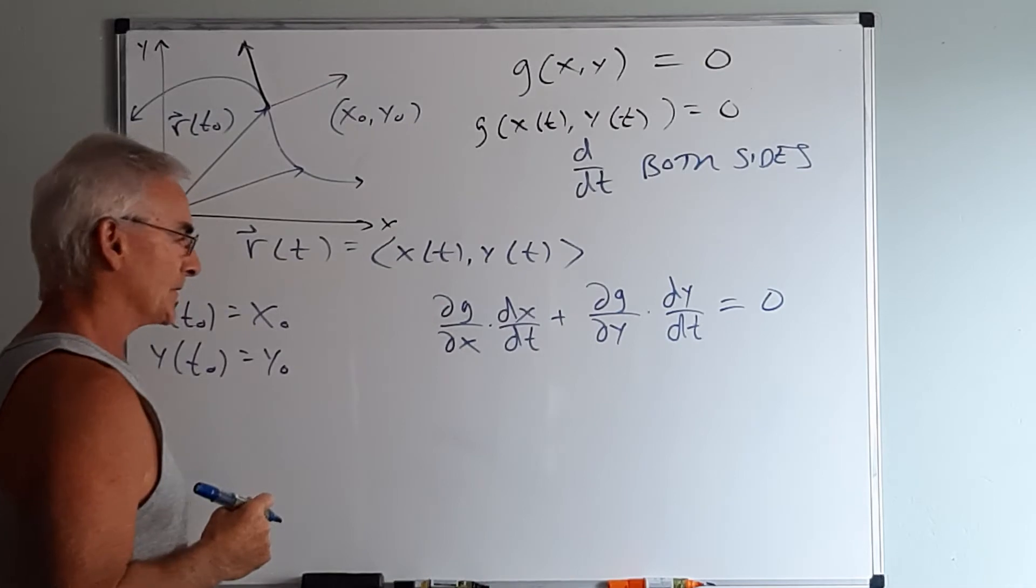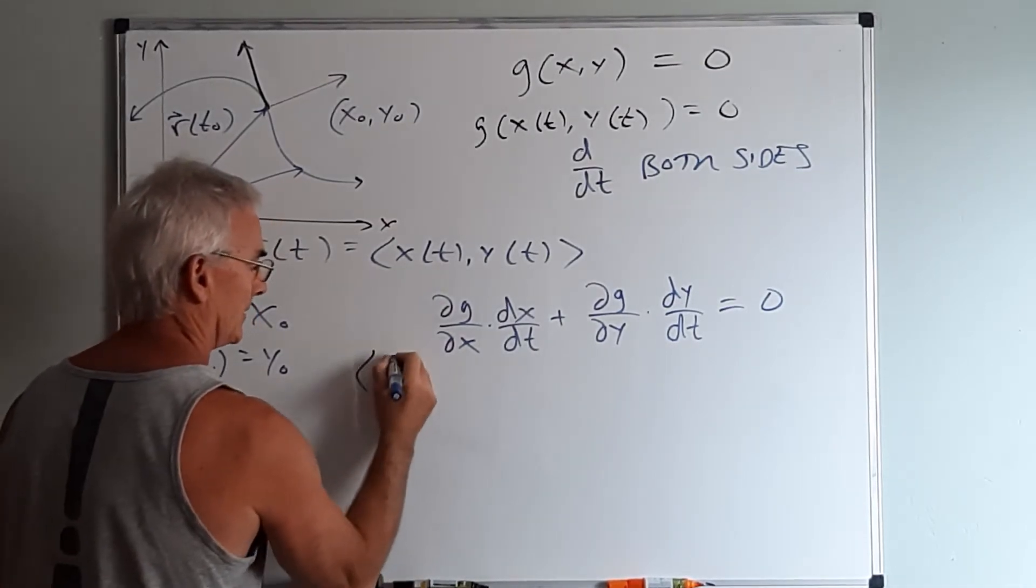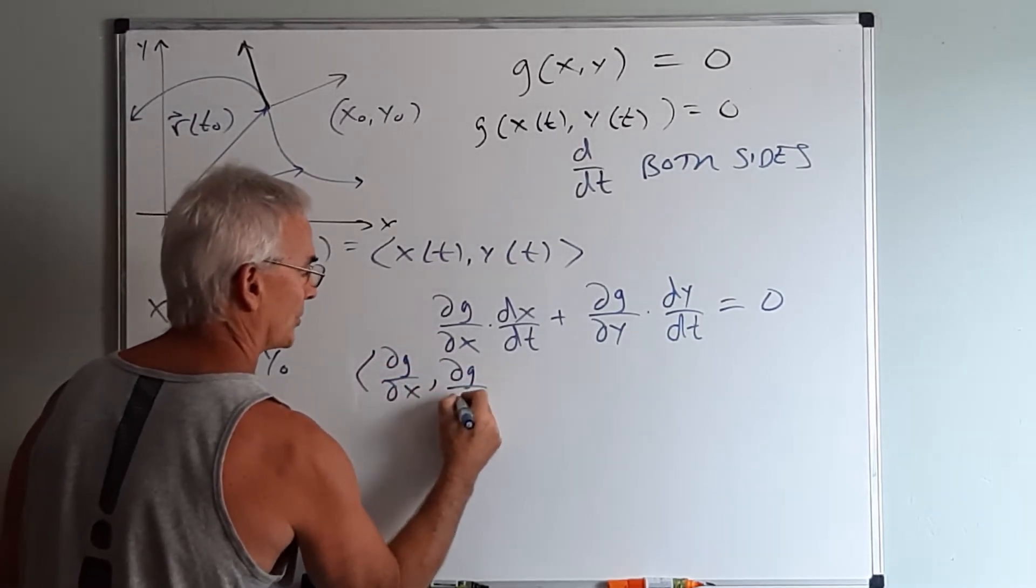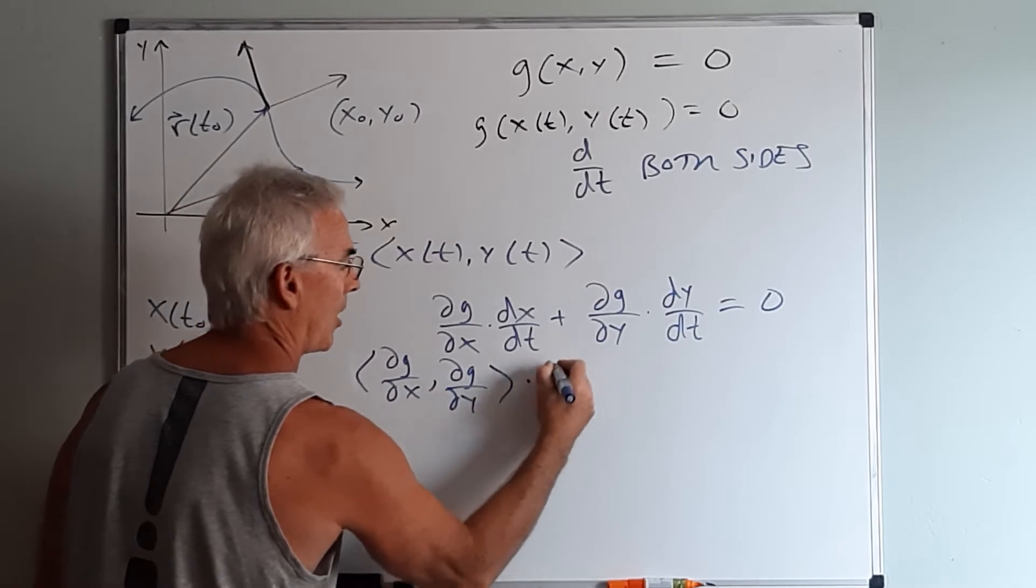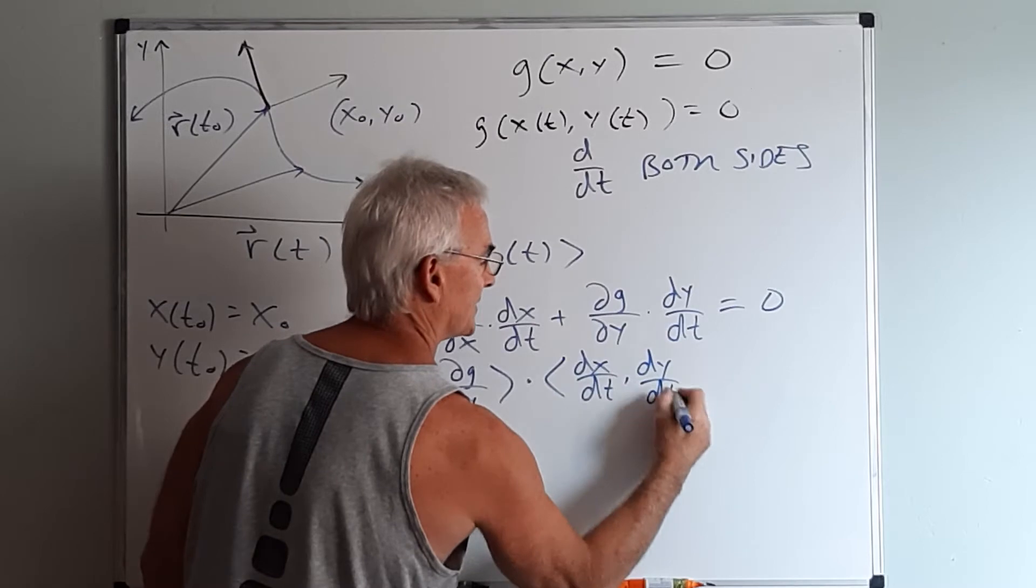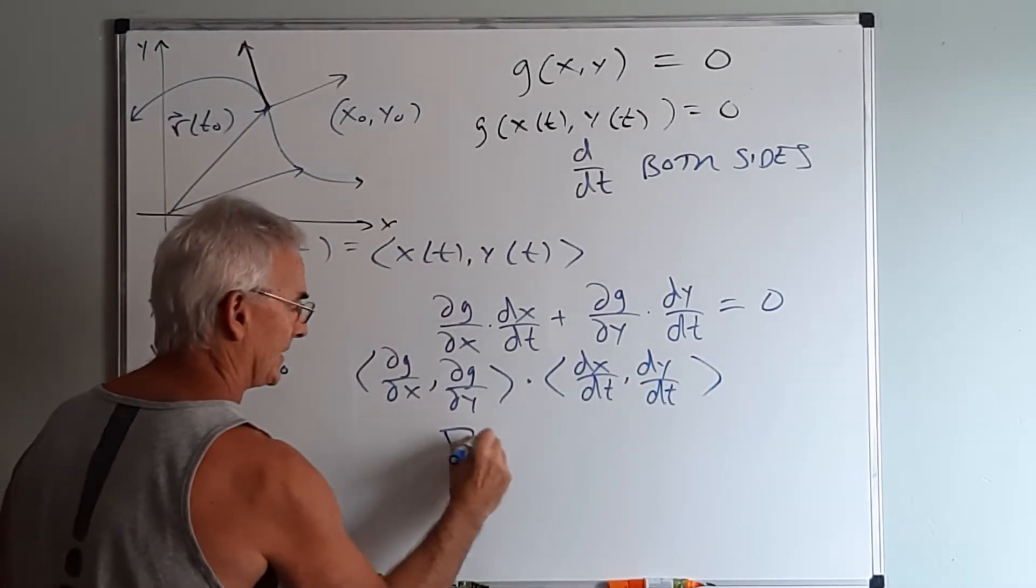But if I look at that quantity that looks like the result of a dot product, very specifically partial of g with respect to x, partial of g with respect to y dotted with dx dt, dy dt. This guy here is simply the gradient of g.